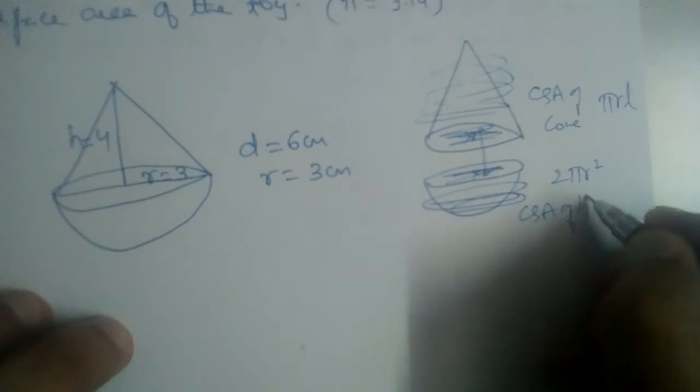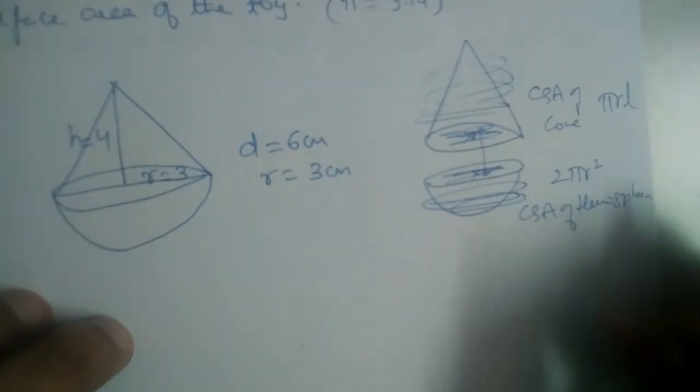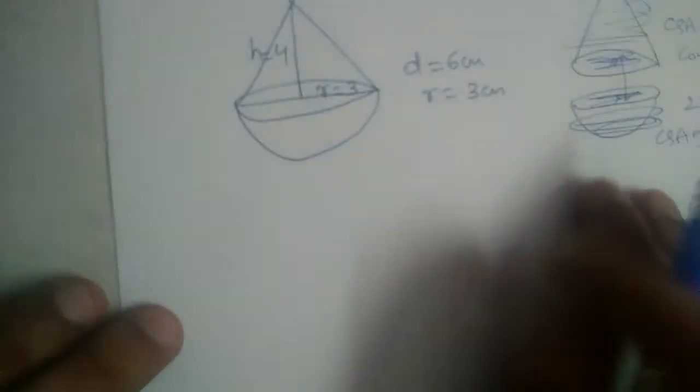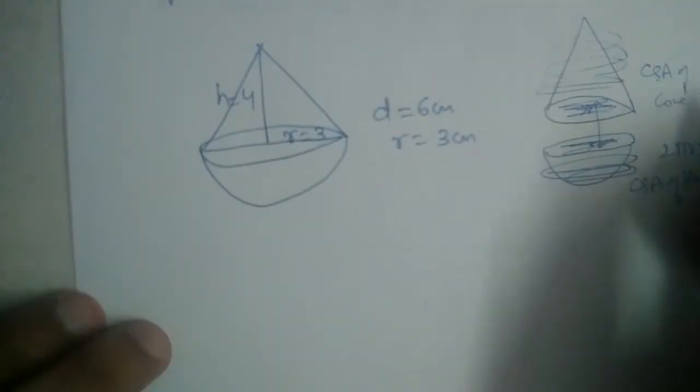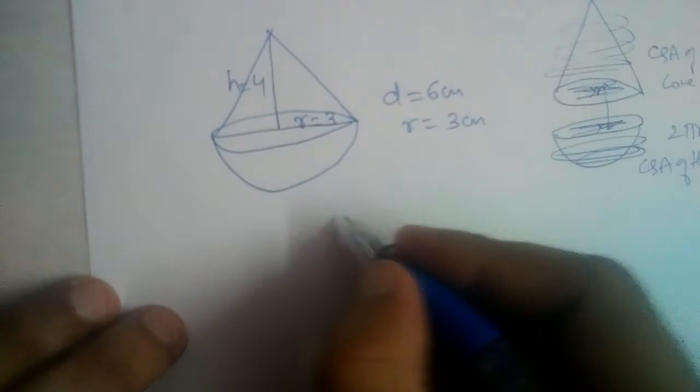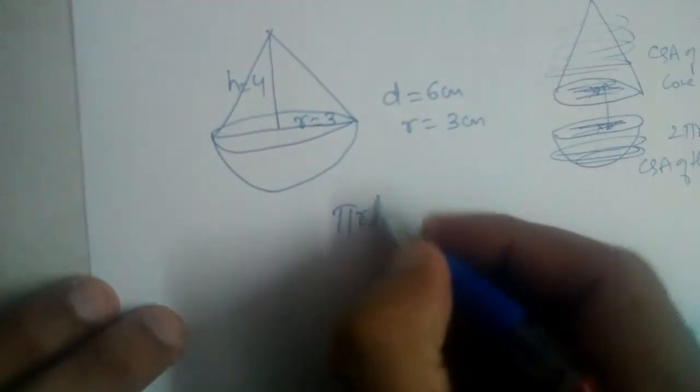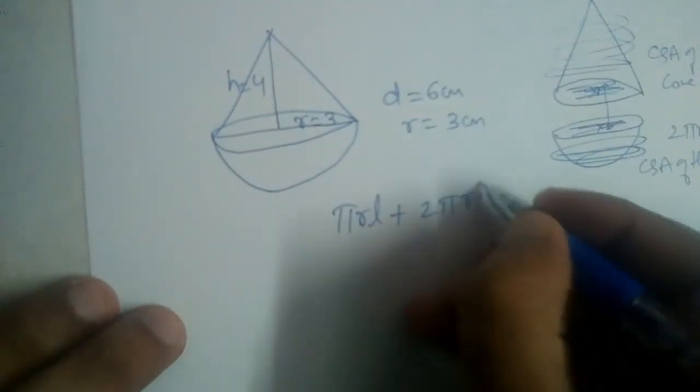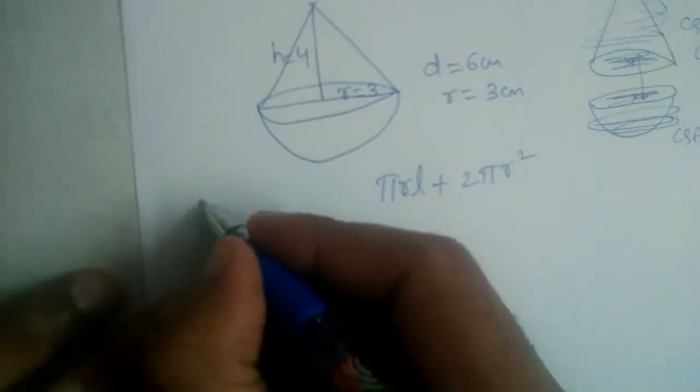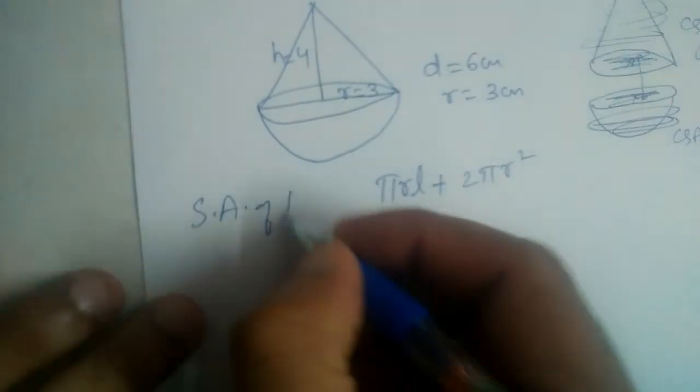So curved surface area of cone plus curved surface area of hemisphere will give us total surface area of the toy. All right, so let us first find the surface area of the toy.